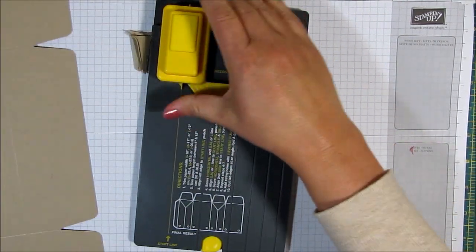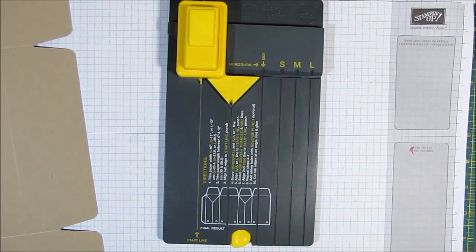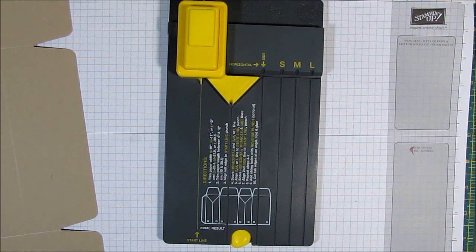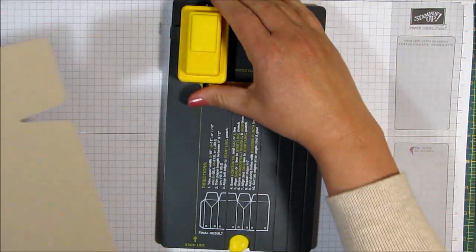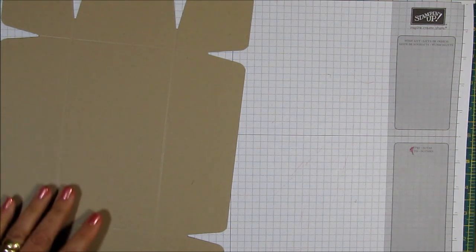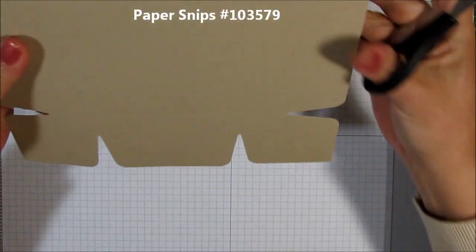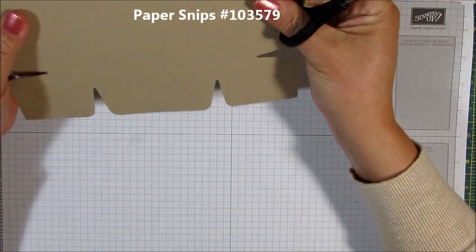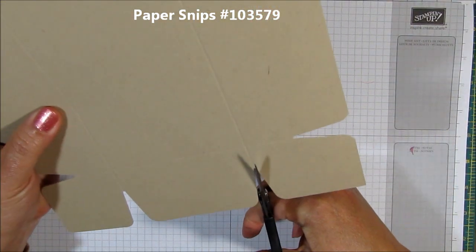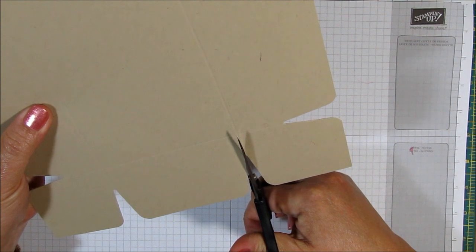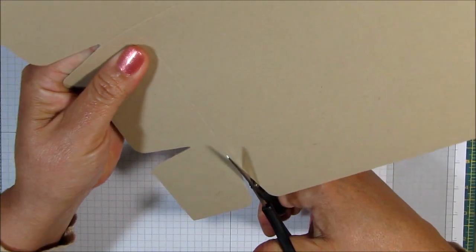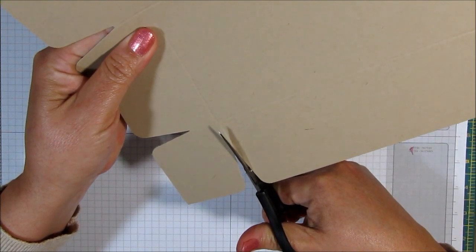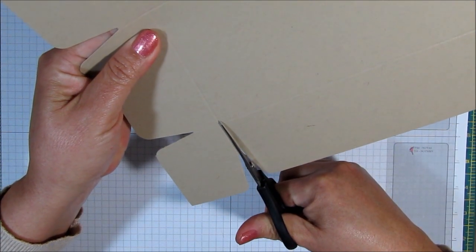So I'm going to do that with every score line along on all four sides of this piece of paper. And we're done with our gift bag punch board.